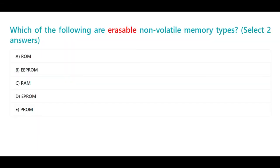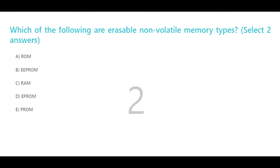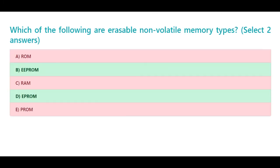Which of the following are erasable non-volatile memory types? Select two answers. A. ROM. B. EPROM. C. RAM. D. EEPROM. The correct answers are B. EPROM and D. EEPROM.